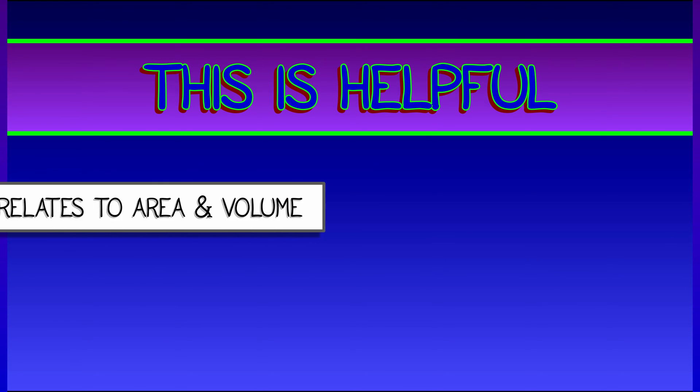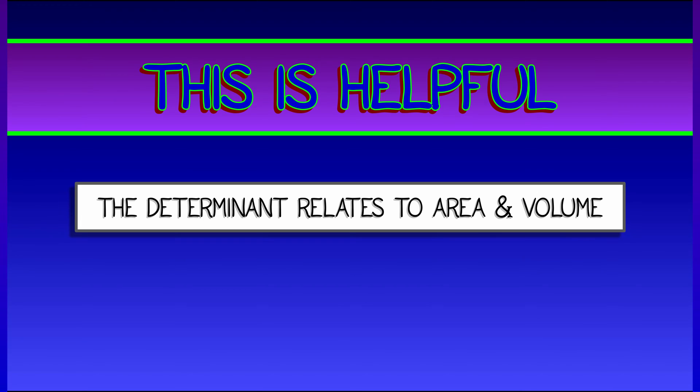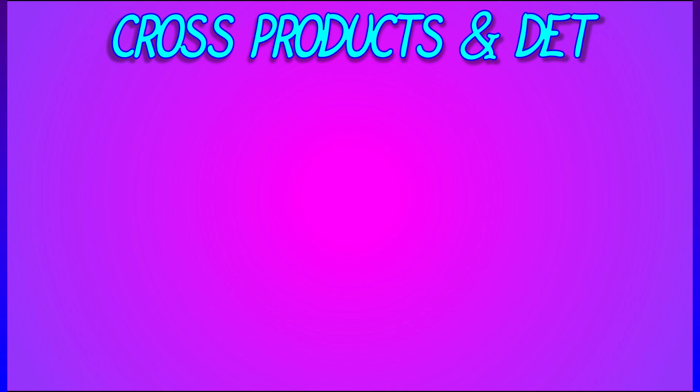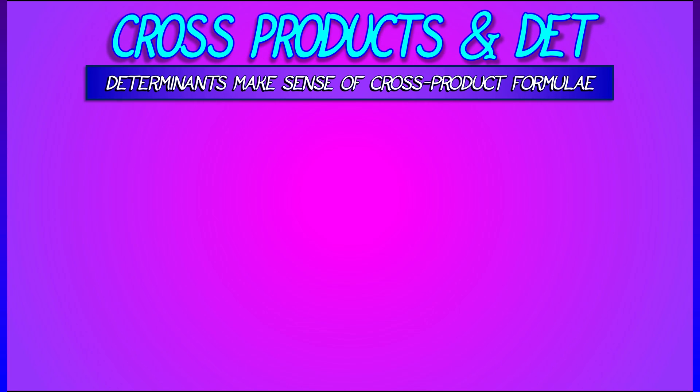I claim that it's really helpful to have a relationship between determinants and geometric things like areas, volumes, etc. Let's see how that understanding illuminates things that we have learned previously about the cross product.